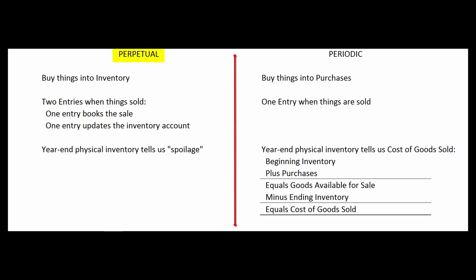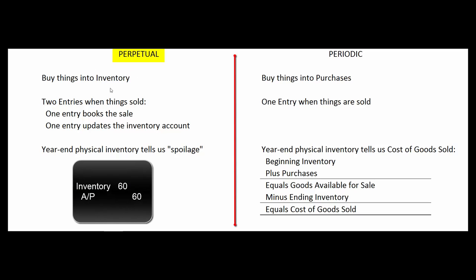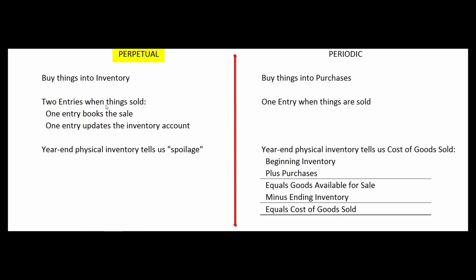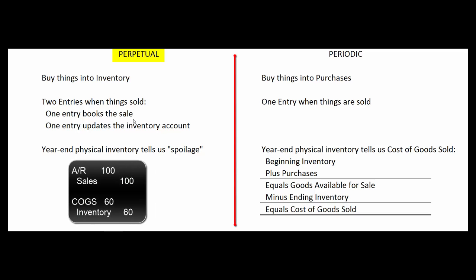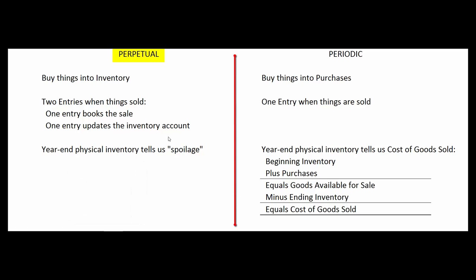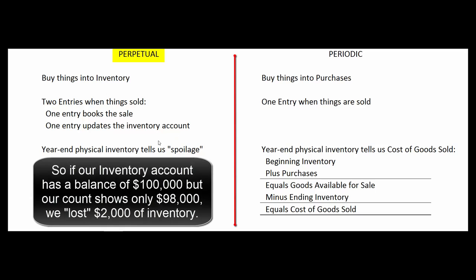By way of review, the perpetual inventory system is where we perpetually update our inventory. So when we purchase things, we buy them in an account called inventory. And when we sell things, there are two journal entries — one books a sale and one updates the inventory account. At the year end, we take a physical inventory and that tells us our spoilage, what got lost or what got stolen.